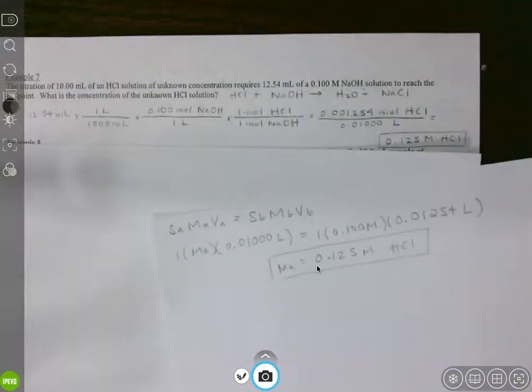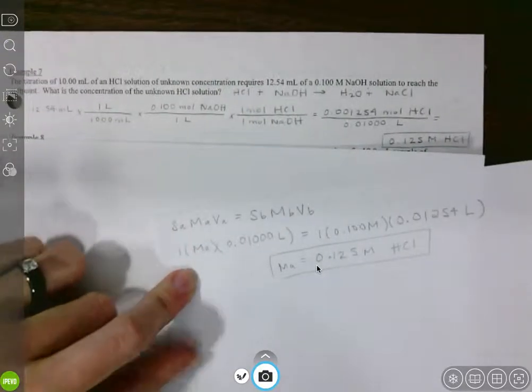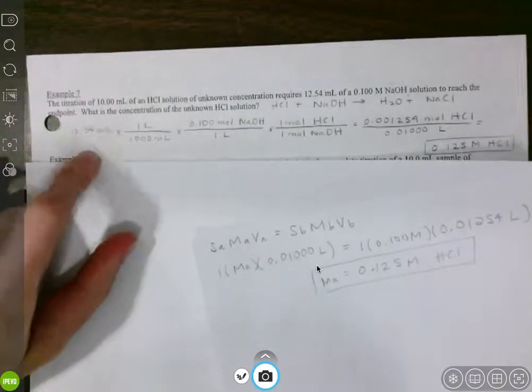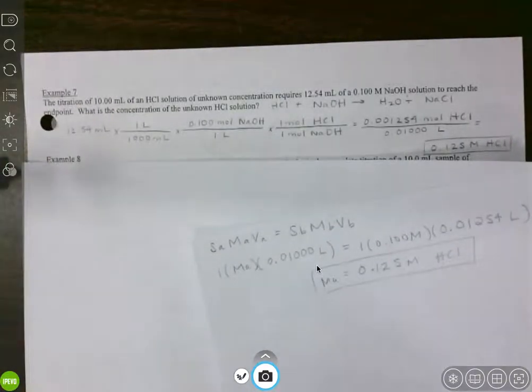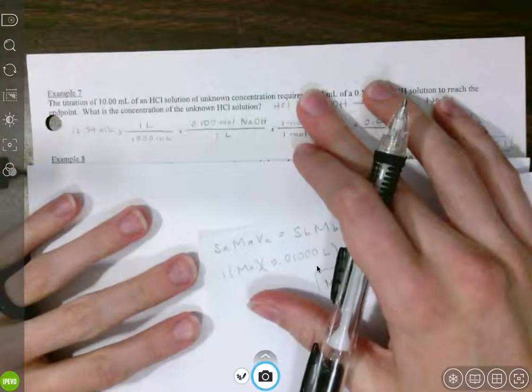Either one is correct. If you like the shortcut version, go with the shortcut version. If you want to go on an adventure, do it the long way. I like the adventures, so long way for me.